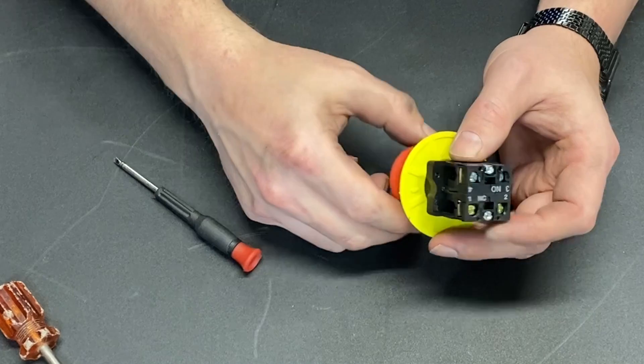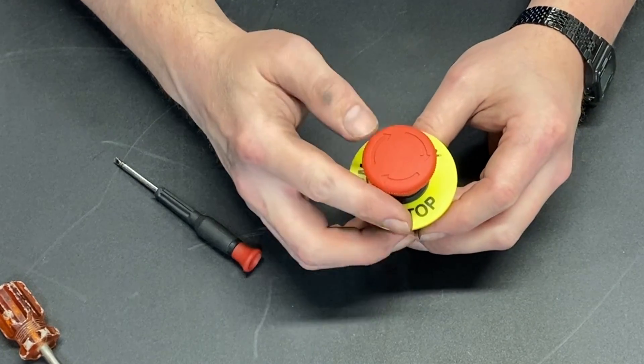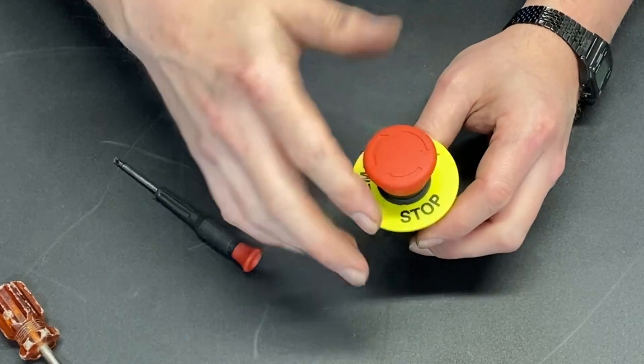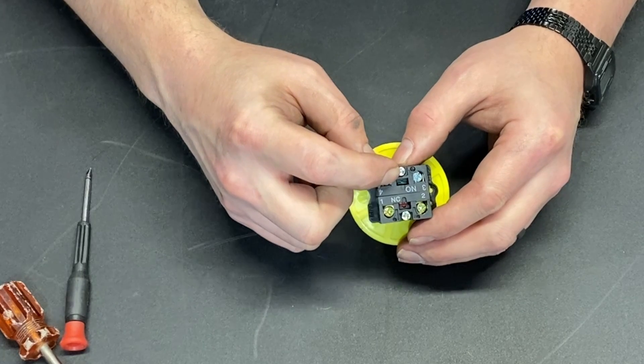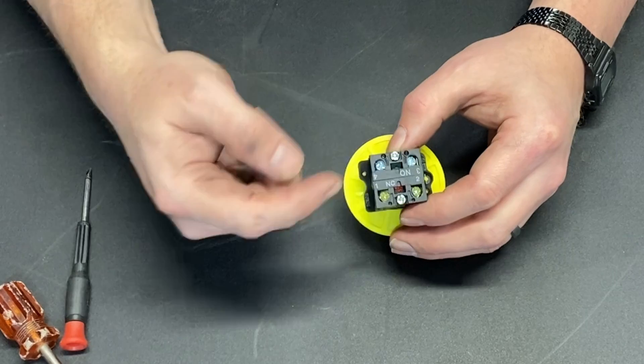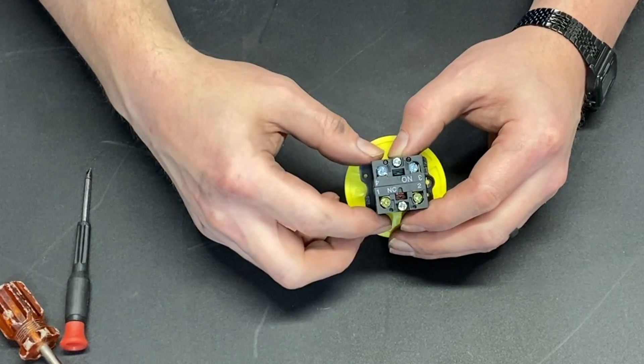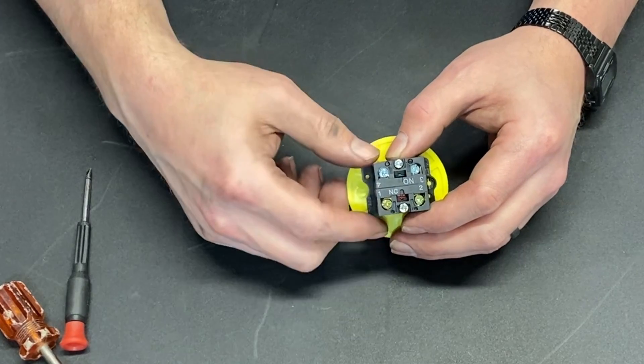So what that means is when it's in the running position, so we haven't hit emergency stop, so it's out, it's doing what it's supposed to do. Normally open is not going to make a connection. The connection is going to be open. Normally closed is going to be making the connection. The connection between this terminal and this terminal is closed, meaning we have continuity.